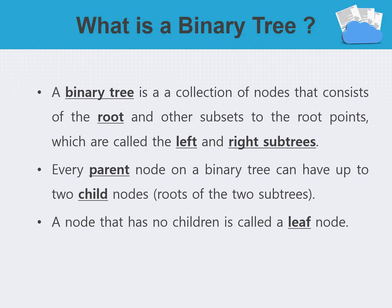Let's start by understanding what binary trees are. They are hierarchical data structures consisting of nodes, each with at most two children. A binary tree is a collection of nodes that consist of a root and other subsets — the left and right subtrees. Every parent node in a binary tree can have at most two children, and the node that has no children is called a leaf node. These nodes are connected by edges, and binary trees have specific properties: a left and right subtree, with each node having at most two children.